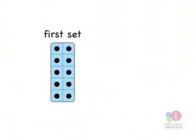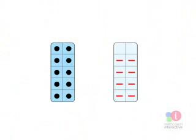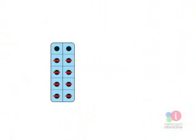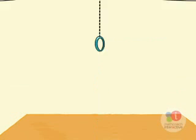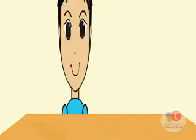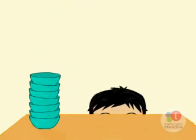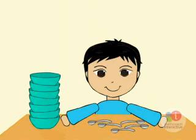Subtraction tiles are a great way to model word problems that compare two amounts. Let's try this example: Sam has seven bowls and five spoons. How many more bowls than spoons does Sam have?